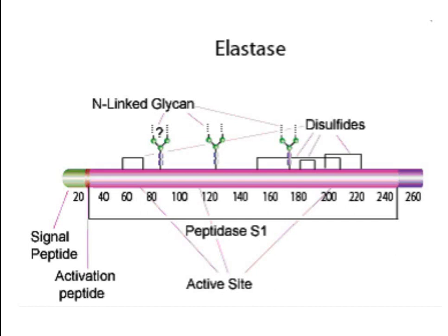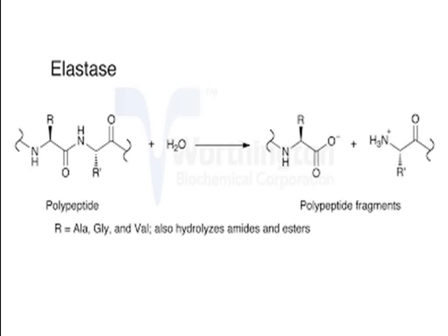Elastase is similarly produced from its corresponding zymogen, proelastase, by the action of trypsin. It cleaves polypeptide chains at the C-terminal side of small amino acid residues like alanine, glycine, and valine. It also hydrolyzes amides and esters. The similar primary structure and almost identical tertiary structure of these three enzymes suggest they evolved from a common ancestor by divergent evolution.